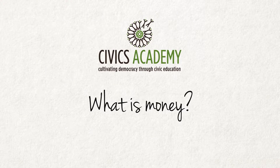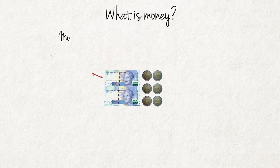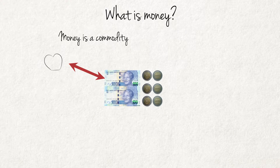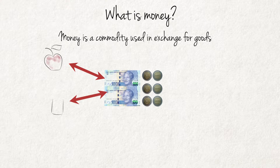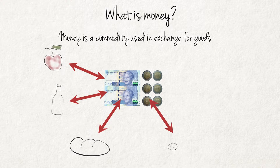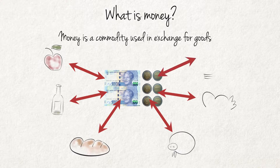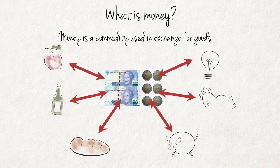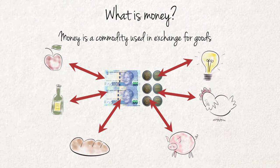What is money? Money is a commodity used for payment in exchange for goods and services. In South Africa, we think of money as rands and cents, and prices are expressed in these terms.